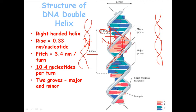Major and minor grooves differ in various aspects which we will discuss later. Also important is that the distance between the two strands is always maintained at 2.37 nanometers. If this structure deviates from its native form, the DNA cannot be stable, because the hydrogen bonding between the bases is the most important stabilizing force.